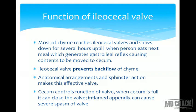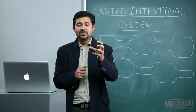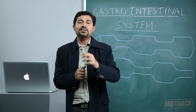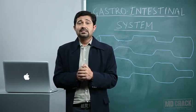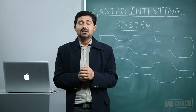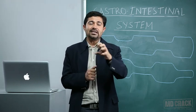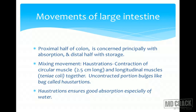The major function of the ileocecal valve is to prevent the backward flow of chyme from the large intestine into the small intestine. If there is contraction of the cecum or large intestine, the valve closes so chyme moves only in the forward direction. In appendicitis, the reflex from the cecum can be so strong that it almost closes the ileocecal valve, preventing emptying of the ileum, which helps protect the inflamed appendix.